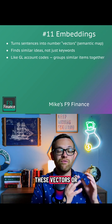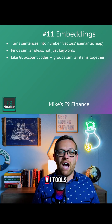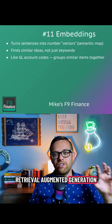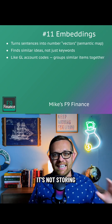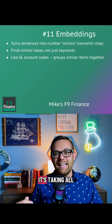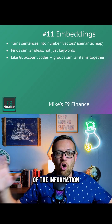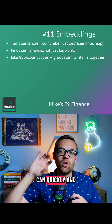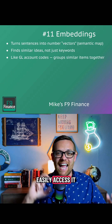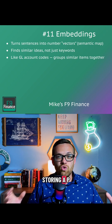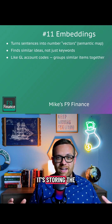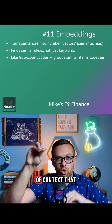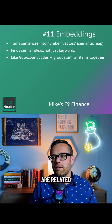These vectors, or embeddings, are how AI tools work with retrieval augmented generation. It's not storing your exact PDF — it's taking all of the information and grouping it together in a way that it can quickly and easily access it. It's storing the PDF's information in different groups of context that are related.